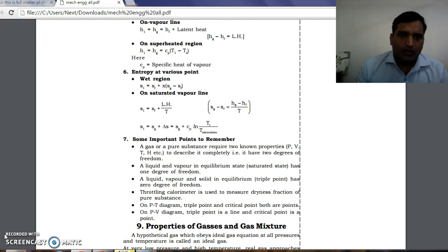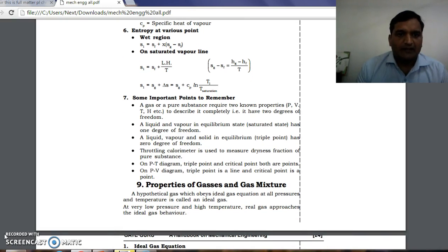There are some important points which we should remember: A gas or pure substance requires two known properties—pressure, volume, temperature, enthalpy, etc.—to describe it completely. It has two degrees of freedom. A liquid and vapor in equilibrium (saturated state) has one degree of freedom. A liquid, vapor, and solid in equilibrium (triple point) has zero degrees of freedom. Throttling calorimeter is used to measure dryness fraction of pure substance. On P-T diagram, triple point and critical point both are points. On P-V diagram, triple point is a line and critical point is a point. Thank you.